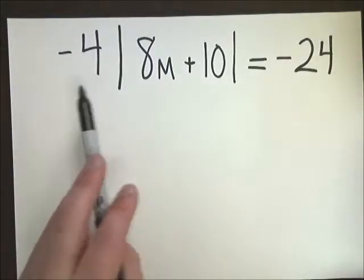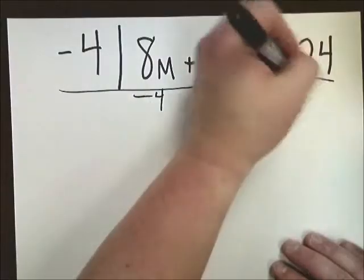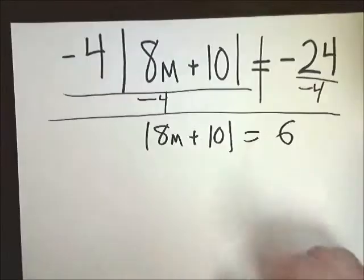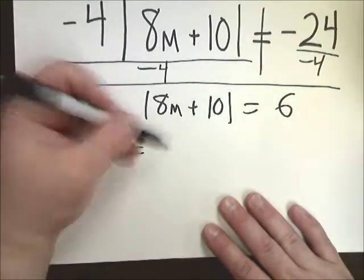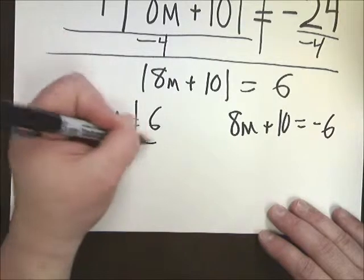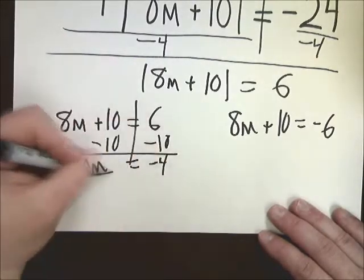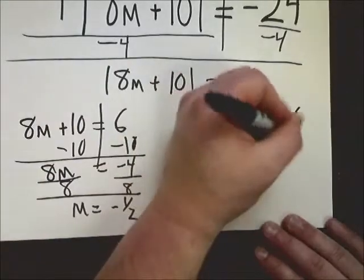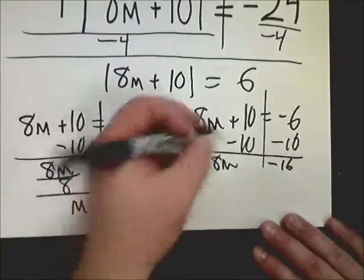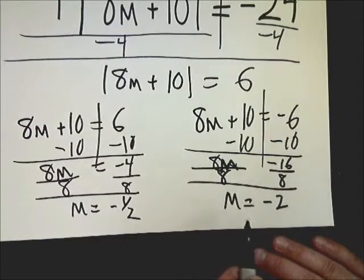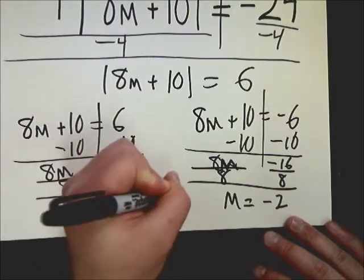In this case, the whole absolute value is divided or multiplied by negative 4. So to solve that, I'm just going to divide by negative 4 on both sides. So I get the absolute value of 8m plus 10 equals 6. So when I do the setup, I'm going to split it out. 8m plus 10 equals 6, or 8m plus 10 equals negative 6. Draw the line. Divide by 8. 8m equals negative 1 half. On the other side, 8m equals negative 16. Divide by 8. m equals negative 2. So my answer set here is negative 2 and negative 1 half.